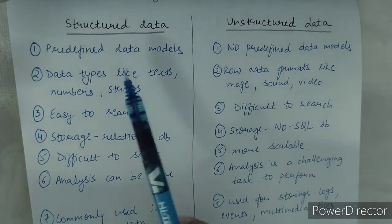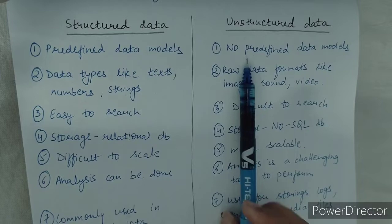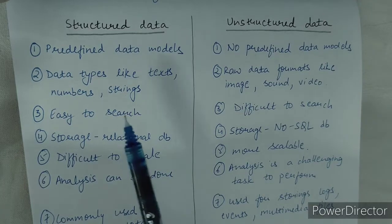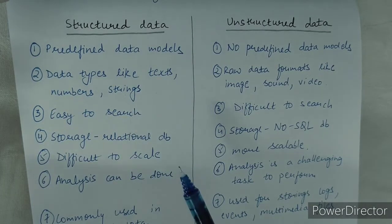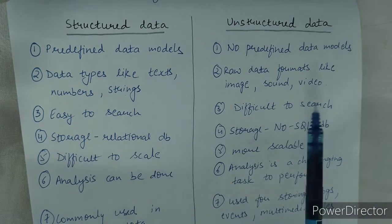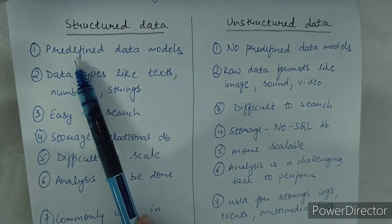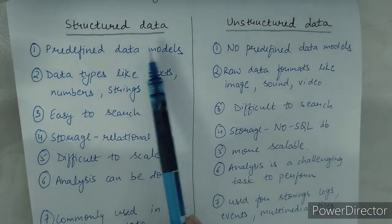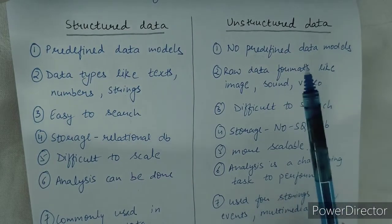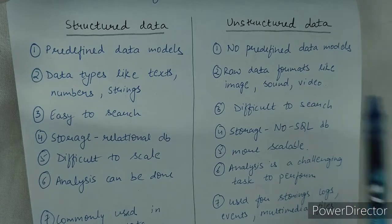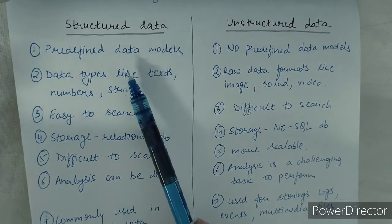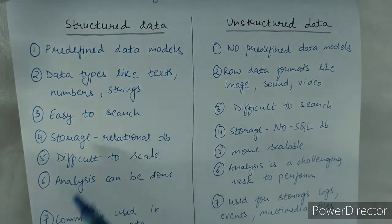The next topic is the difference between structured data and unstructured data, given in tabulated form. If there is an individual question, elaborate these points in paragraph form — this has come in previous year questions. The first point: structured data has predefined data models, while unstructured data has no predefined models — for example, PDF or Word files. Structured data is stored in proper relational databases in tabulated form, for example RDBMS.